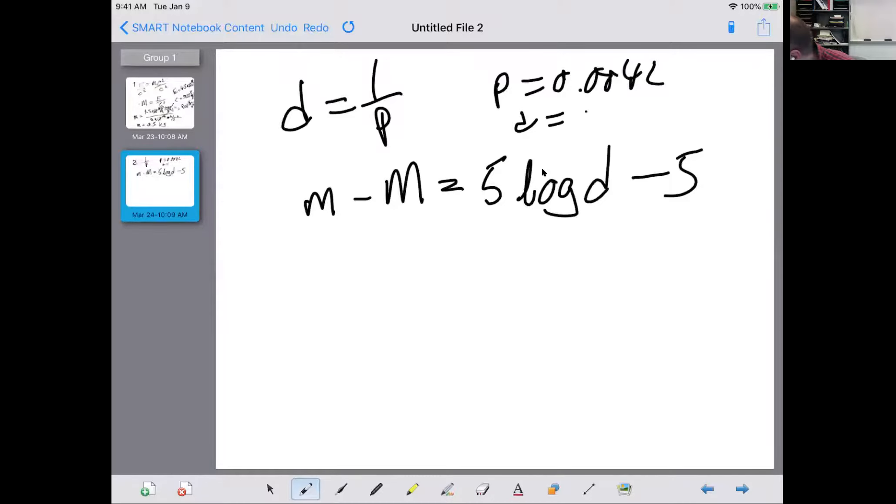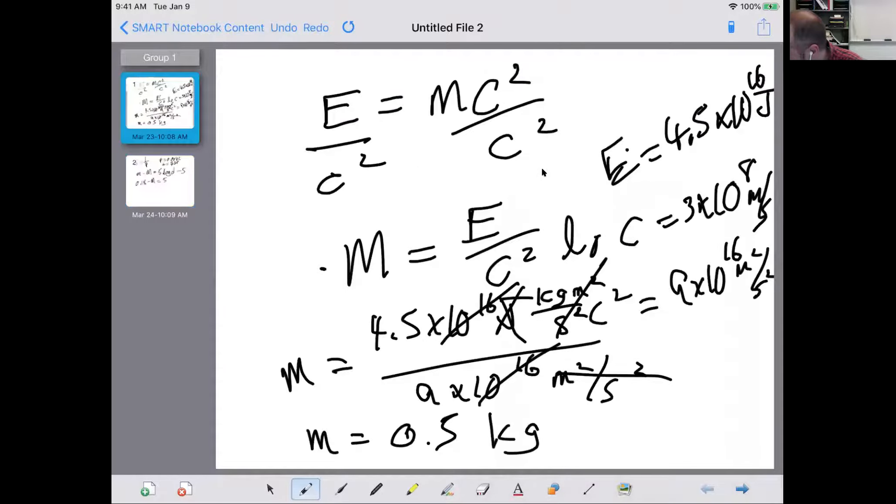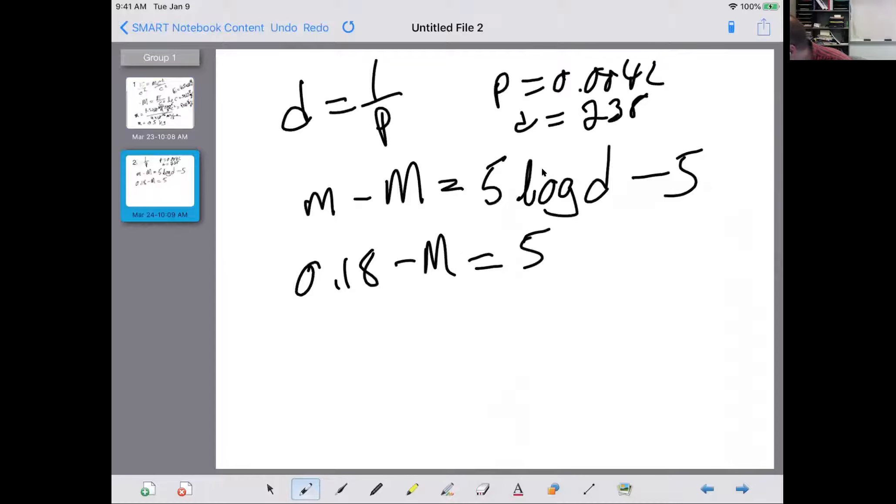D equals 238. So we can plug that in. The apparent magnitude is 0.18. So 0.18 minus absolute magnitude equals five times the log. I'm not very good at this yet. My wrist keeps hitting those arrows. Log D. And in this case, it is 5 times the log of 238 minus 5.